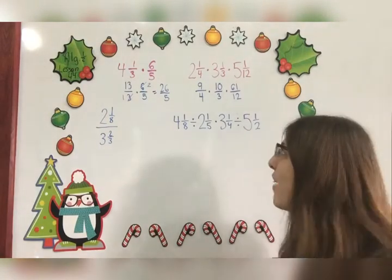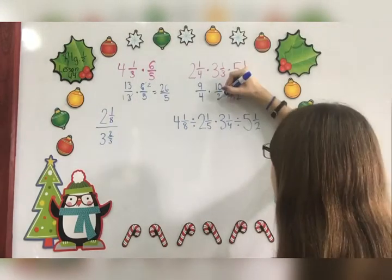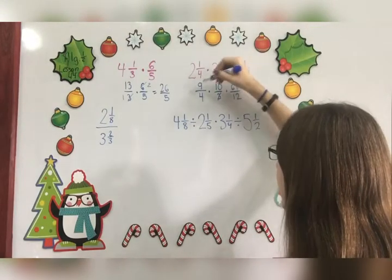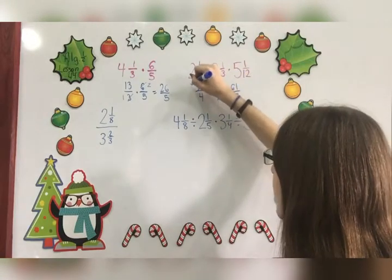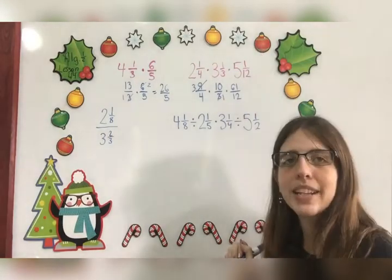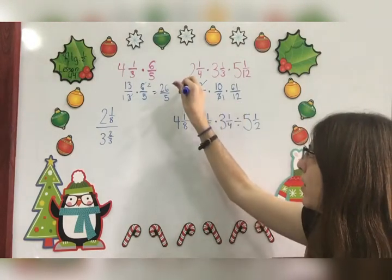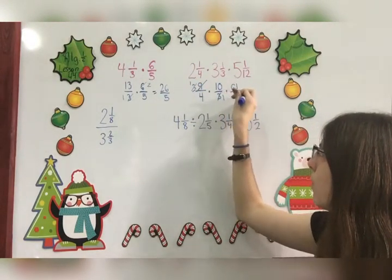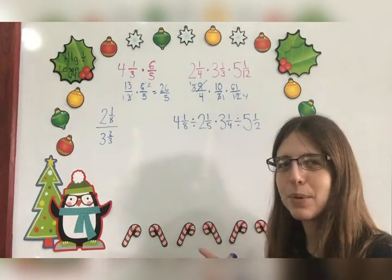Now I'm going to see where I can simplify. The easiest one is this 3 right here. 3 can go into 9, that cancels out. 3 divided by 3 is 1, 9 divided by 3 is 3. Is there more that can be canceled? You bet. How about this 3 and this 12? 3 divided by 3 is 1, 12 divided by 3 is 4. There we go, we're canceling numbers and making them smaller.